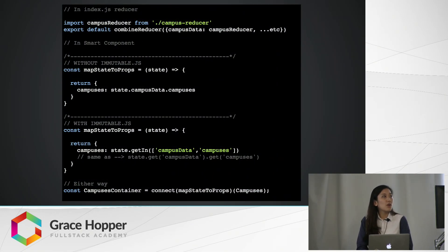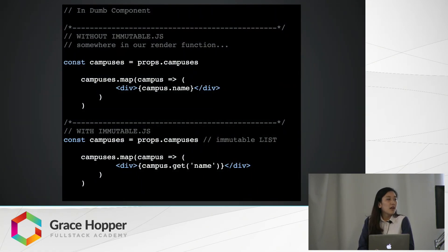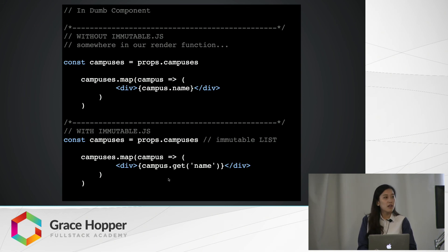In your reducer with combine reducers, without immutable.js you could just dot-access your state, but with immutable you have to use .getIn and pass it an array of properties on your state to get the actual campuses — or you can chain .get calls for each property. Then you connect it like before. When rendering, it's not as simple anymore. You can't just call campus.name — you would have to do campus.get and then get another property on that campus object.